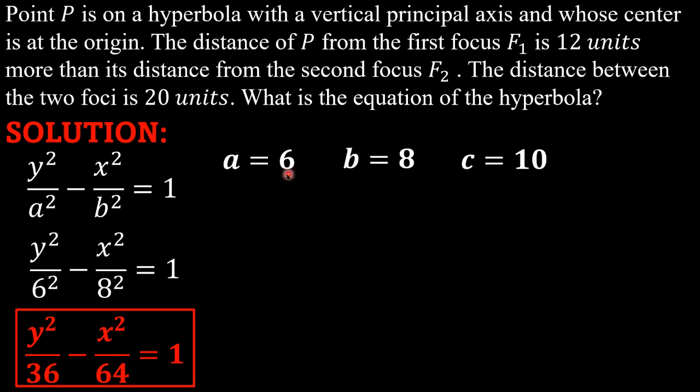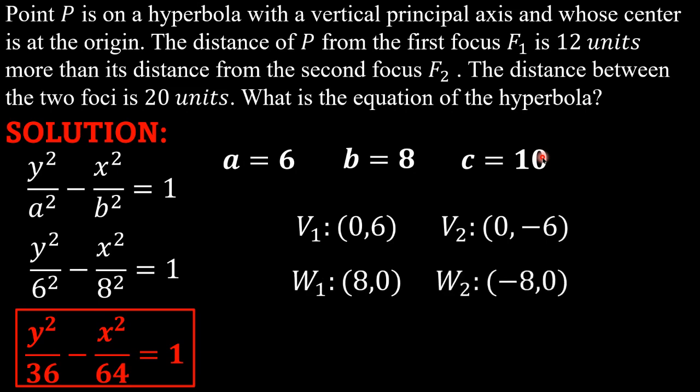Dahil given na rin naman ang value ng a, b, and c, we can now get the vertices, the co-vertices, and the foci. The first vertex is (0,6). The second vertex is (0,-6). The first co-vertex is (8,0), and the second co-vertex is (-8,0). The first focus is (0,10), and the second focus is (0,-10).